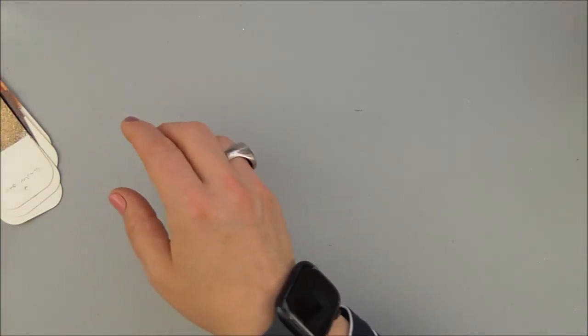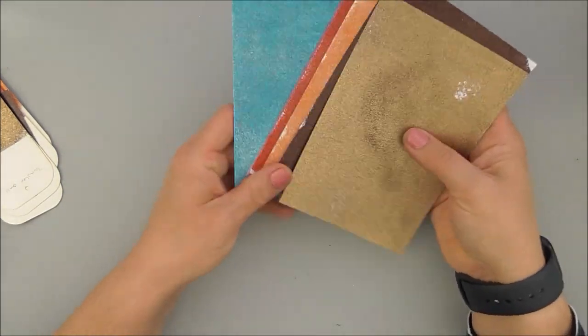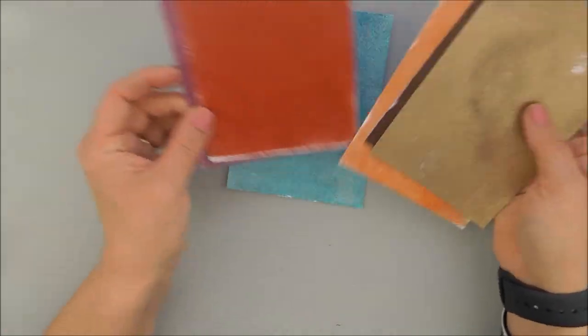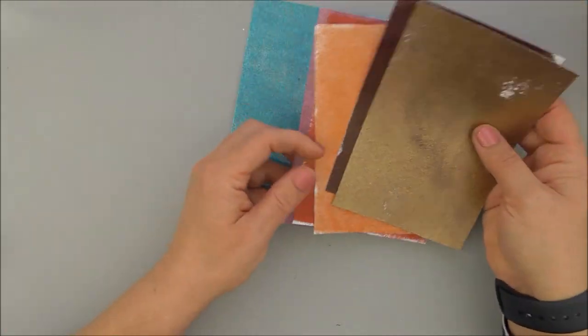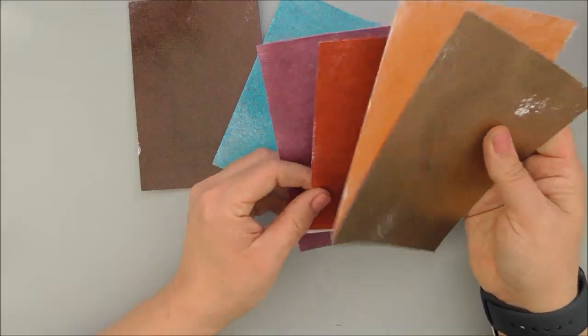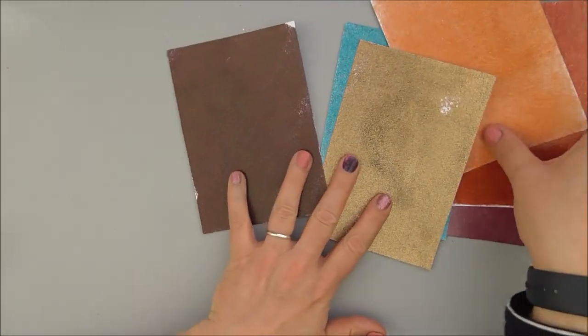As always, when I get new embossing powders, I take my WOW Superior Smooth cardstock, cut some panels from it, and cover these panels in total with embossing powders. Like this, I get a feeling for the powders. I get an idea of how they work, how they look,